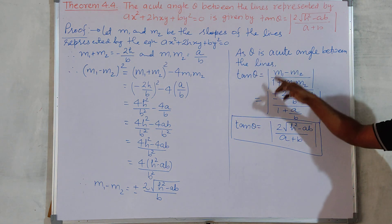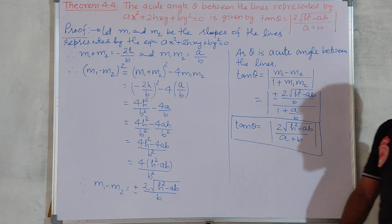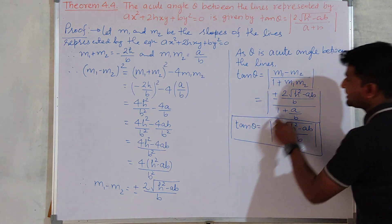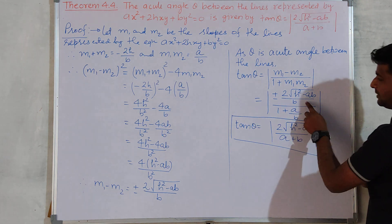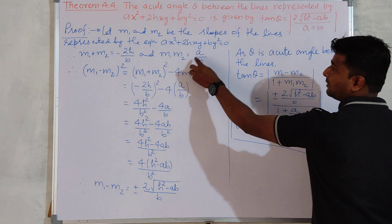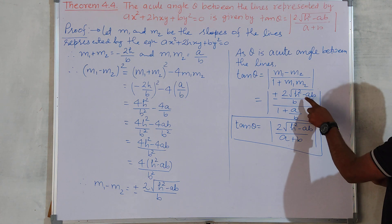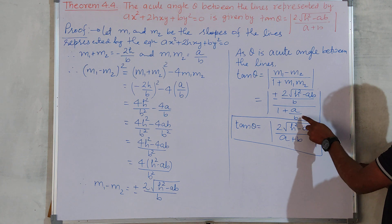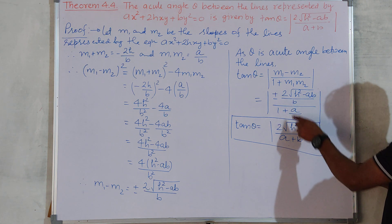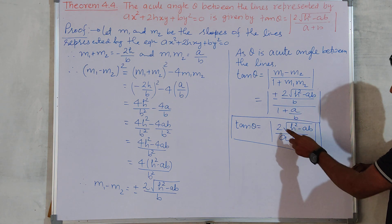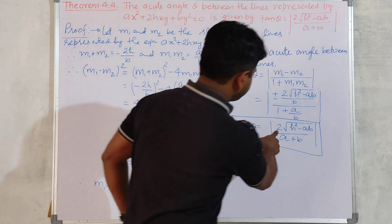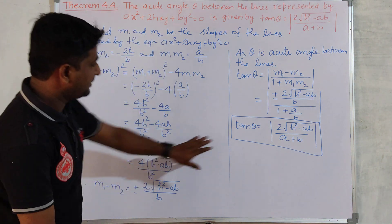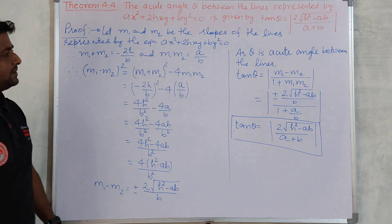Let θ be the acute angle between the lines. Therefore, tan θ = mod of (m1−m2) upon (1+m1·m2). Substituting m1×m2 = a/b into the denominator gives (1 + a/b) = (a+b)/b. After both b terms cancel in the denominator, what is left is 2√(h²−ab) upon (a+b). So this is a very simple formula and also easy to derive.